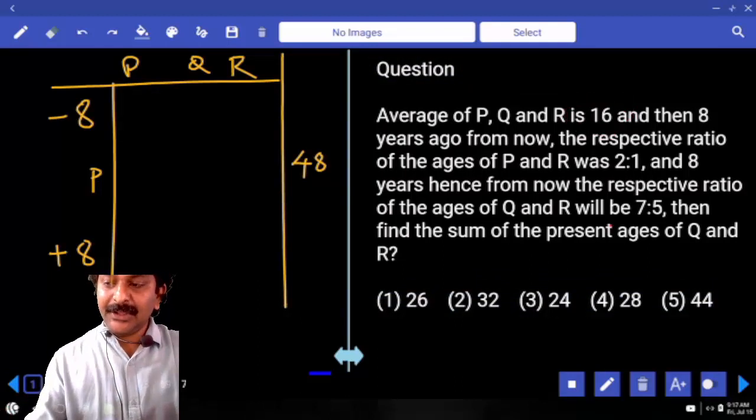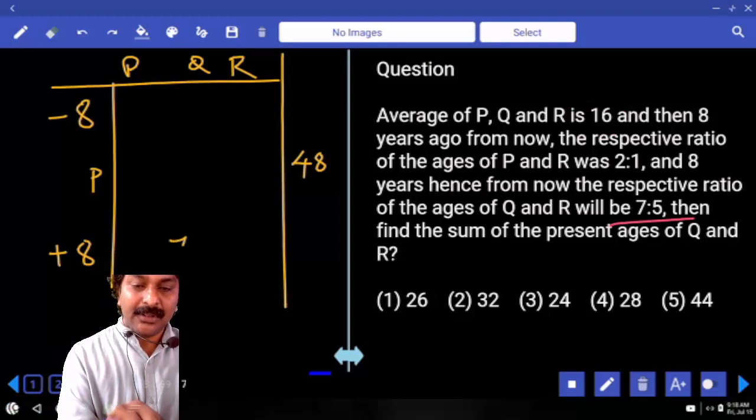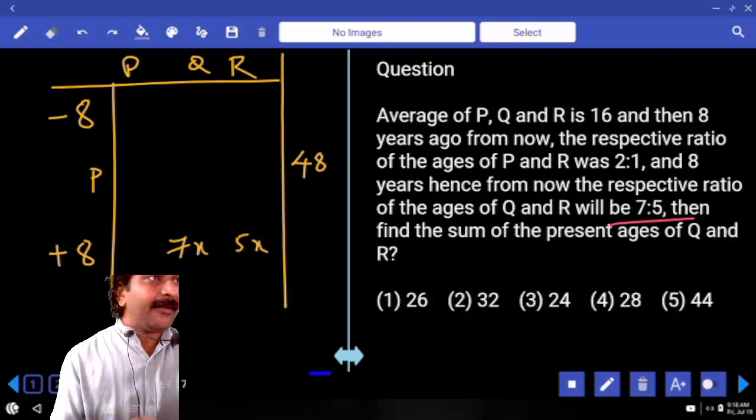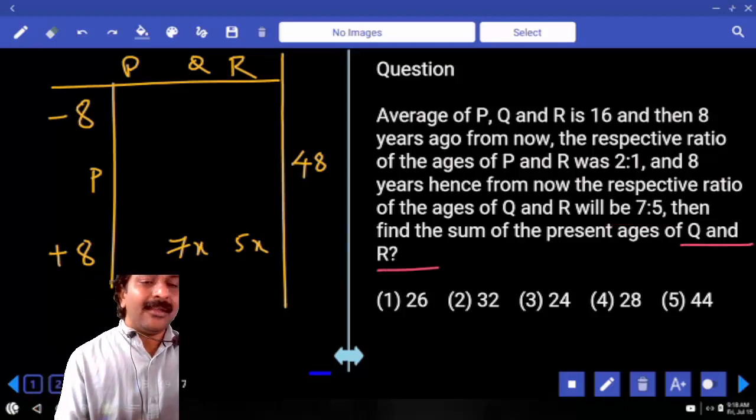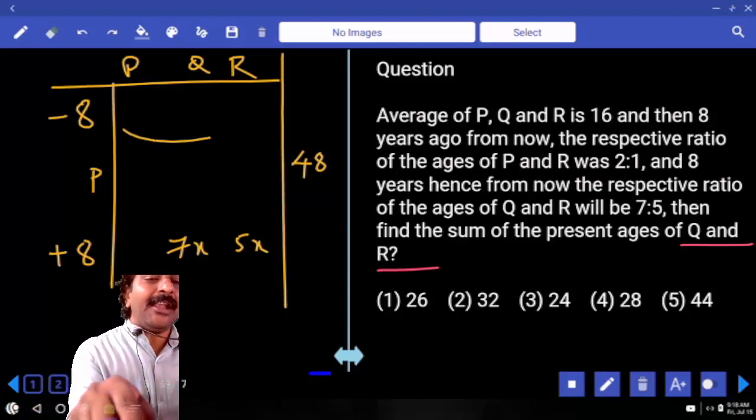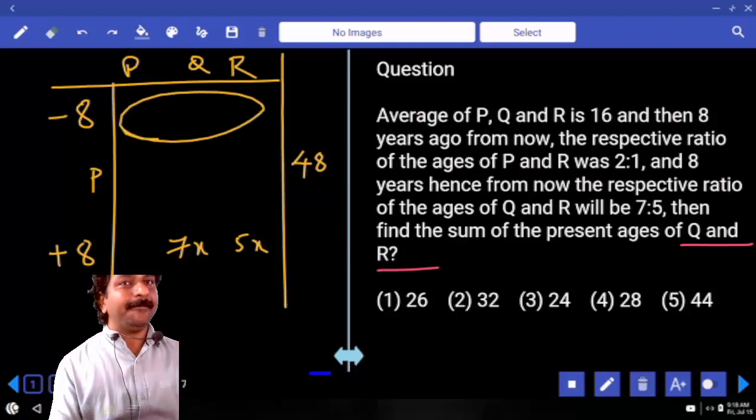After 8 years, Q and R ages ratio is 7 is to 5. And we were asked to calculate sum of present ages of Q and R only. I am not writing what happened 8 years back. Is that okay?